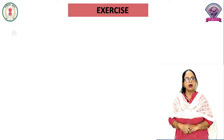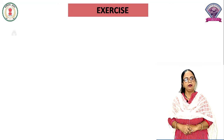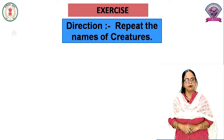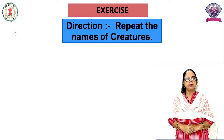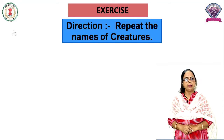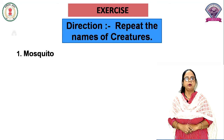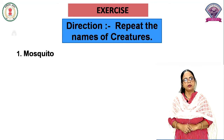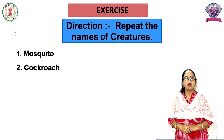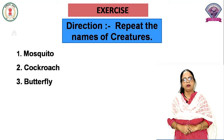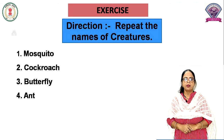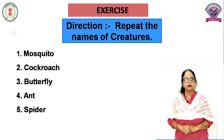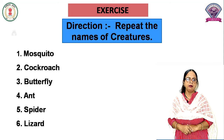Now exercise. Yahan aapko kaarya diya ja raha hai. Repeat the names of creatures — inhe aapko mere saath dohrana hai. First is Mosquito. Say again — Mosquito. Next is Cockroach. Cockroach. And then Butterfly. Say again — Butterfly. And next Ant. Ant. Next is Spider. Say again — Spider. Next is Lizard. Say again — Lizard.